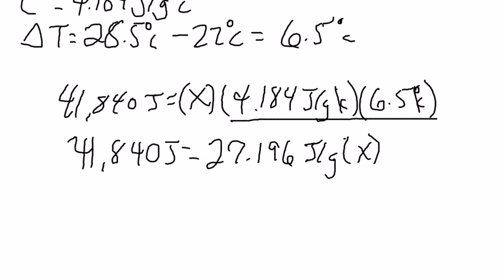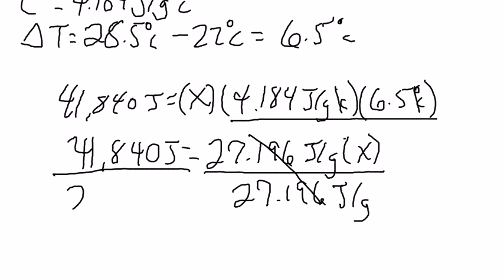So at this point, it just becomes a basic algebra problem, we're solving for X. So we're going to divide out 27.196 joules per gram on each side. We can cross that off, because that's like now. And then divide this side by 27.196 joules per gram.